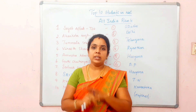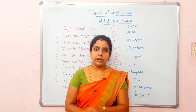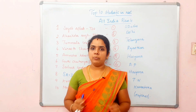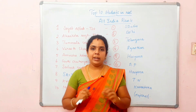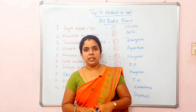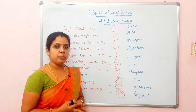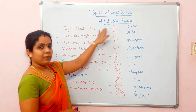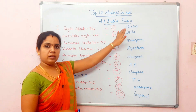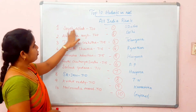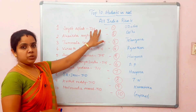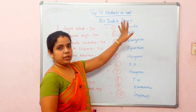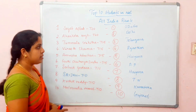We have a student who received 720 out of 720. There are many students who say it is impossible, but he made it possible — 720 out of 720. He got first rank at the All India level. He belongs to Odisha, and here is the first rank.